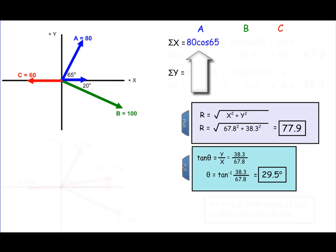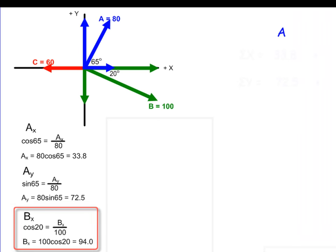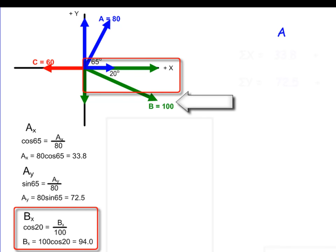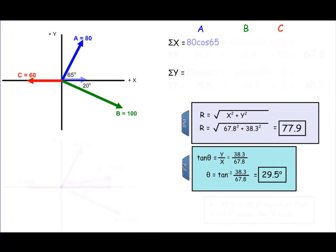Now let's look at the x component of vector B. That is defined by the cosine of 20 degrees, which equals the adjacent leg — the x component of vector B — divided by the hypotenuse, which is 100. So B sub x is equal to 100 cosine 20, which is 94.0. That's where those values came from if you were puzzled by that.